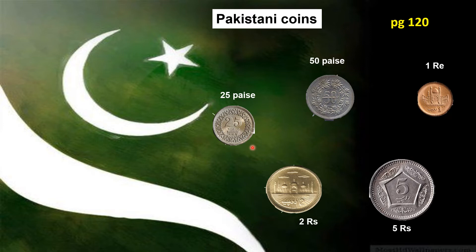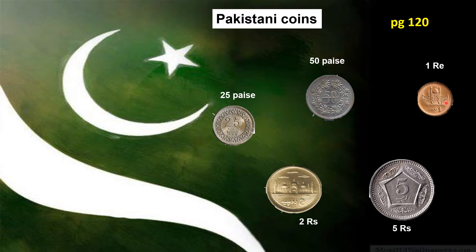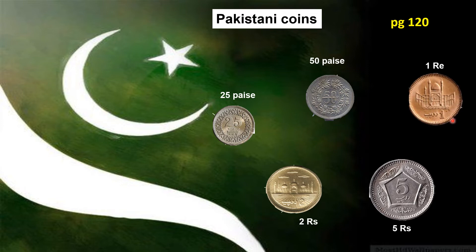This is the smallest coin — 25 paise. Next, we have 50 paise. We write the short form 50P. Next, we have a one rupee coin. It has a motif on one side. It is brown in color. For rupee, we write the short form RE. One rupee.